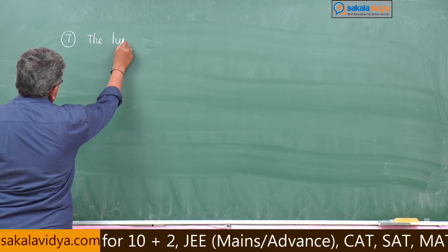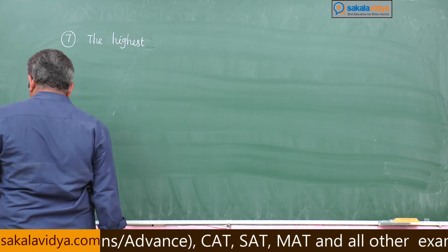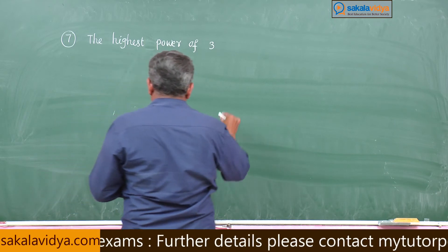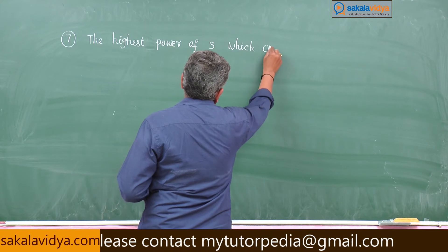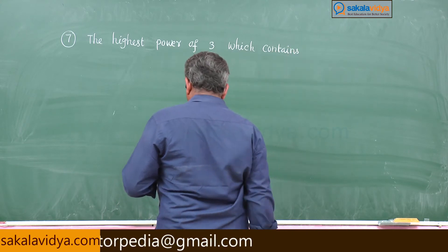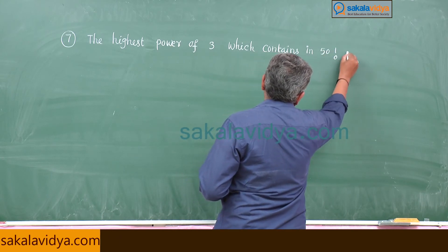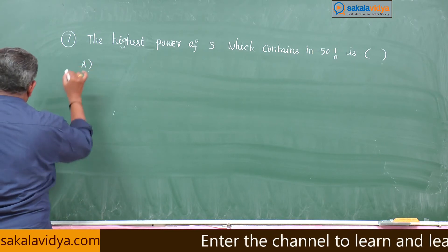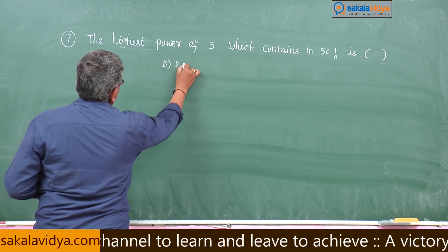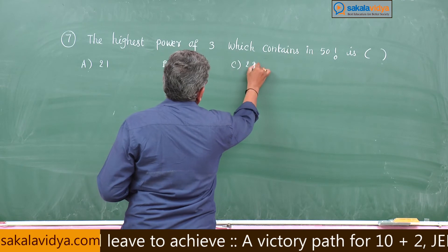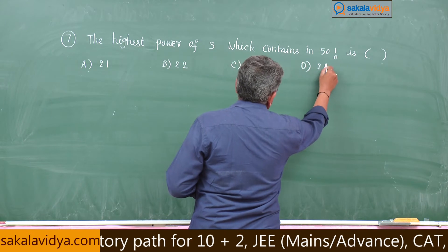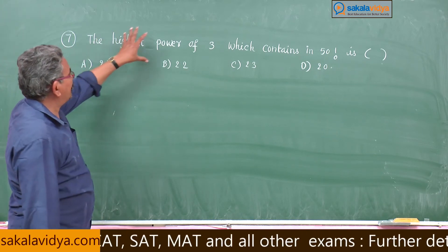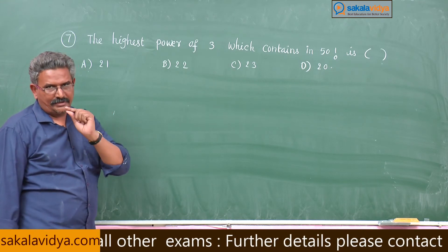The highest power of 3 contained in 50 factorial — options are: A) 21, B) 22, C) 23. To find the highest power of 3 in 50!, we use the greatest integer function. You can write it like this.